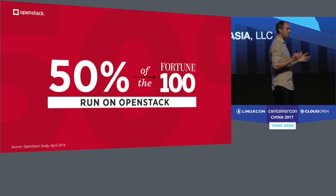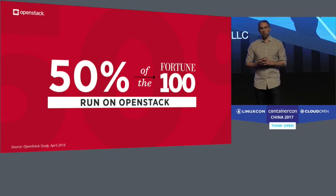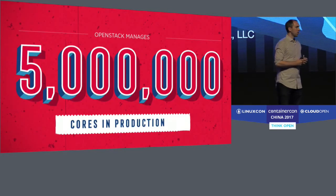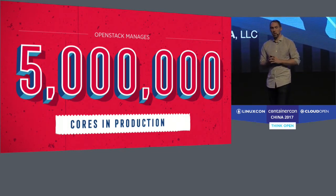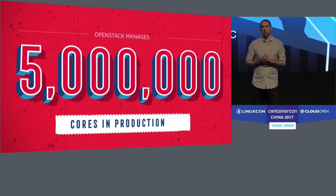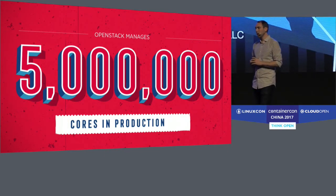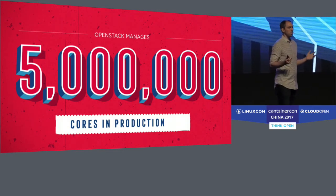When I say that a lot of people are using OpenStack, that includes big companies like Fortune 100 companies — over half of them have OpenStack deployed. But it also includes many small companies, universities, and research institutions. Around the world, there are over five million physical cores of computing power that we've been able to track that are managed by OpenStack — five million cores of capacity, all in these clouds, being used to accomplish different kinds of research and business goals.